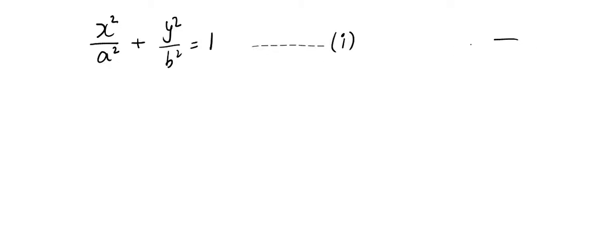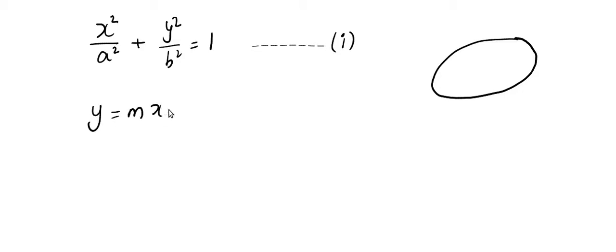Let's have a rough picture. We have an ellipse. Let the required tangent be y = mx + c. We have the ellipse and we are trying to find the equation of the tangent, so we are already assuming the tangent is in the form y = mx + c. The technique is very simple — we try to find the point of intersection.